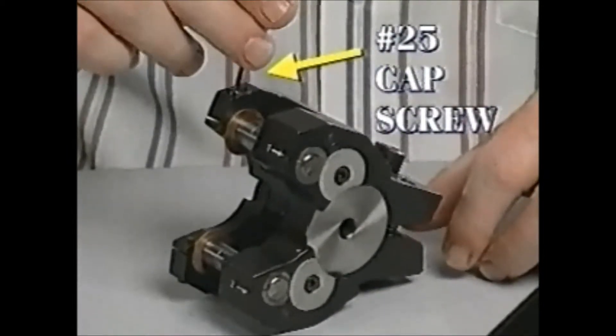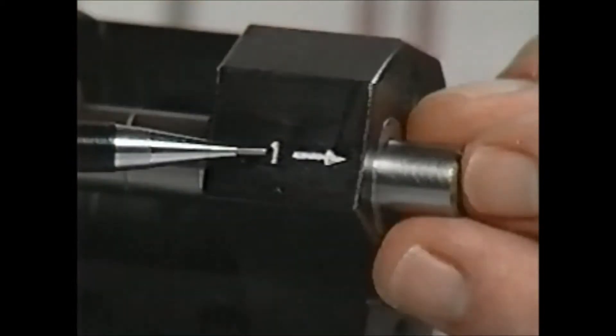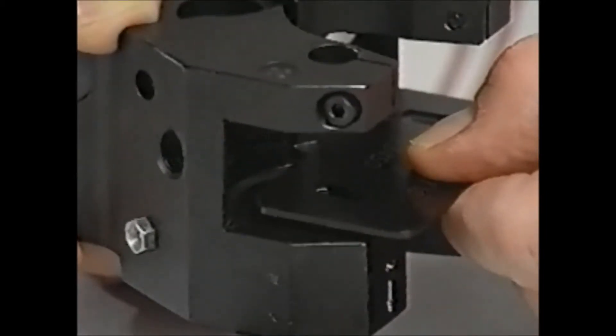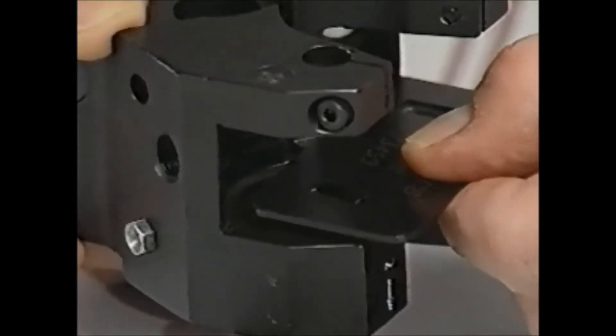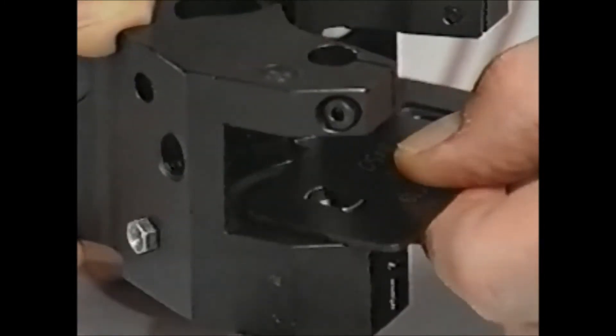Loosen the number 25 cap screw and withdraw the number 3 axles in the direction of the arrows marked on the front of the attachment arms. Using the sheet metal gauge number 36, make sure the drive pinions are in the correct position.